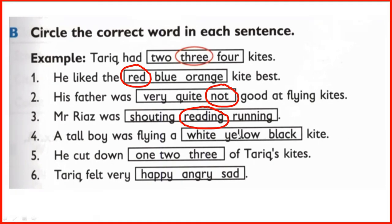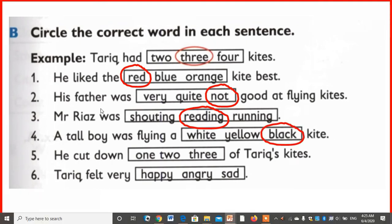A tall boy was flying a white, yellow, or black kite? A tall boy was flying a black kite. Number 5: he cut down 1, 2, or 3 of Tariq's kites? The tall boy cut down 2 of Tariq's kites — 2 is the answer. The last one: Tariq felt very happy, angry, or sad? Because Tariq had lost his 2 kites, he felt very sad — 'sad' is the answer.